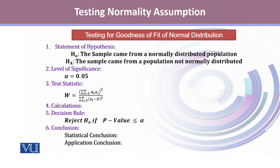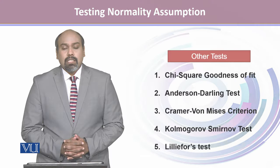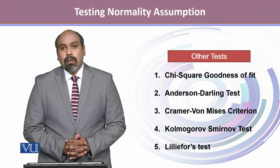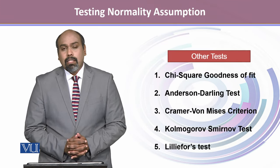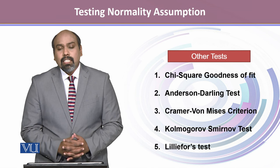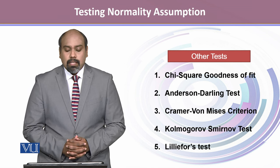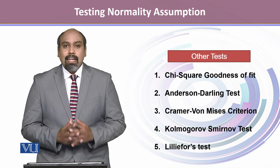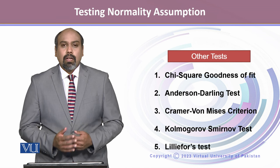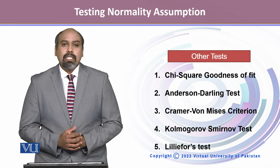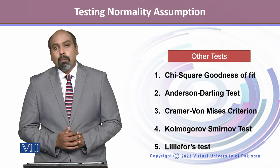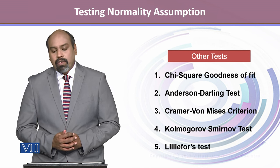There are some other tests for the goodness of fit for the normality distribution. These include the chi-square goodness of fit test, the Anderson-Darling test, the Cramér–von Mises test, the Kolmogorov-Smirnov test, and the Lilliefors test.